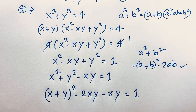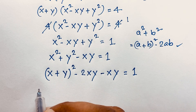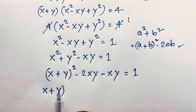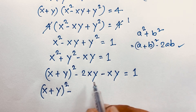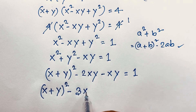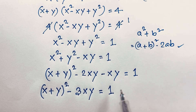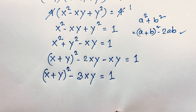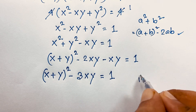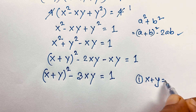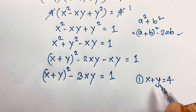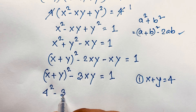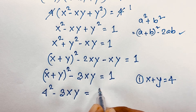Solving step by step: x plus y bracket squared minus 2xy minus xy equals x plus y squared minus 3xy is equal to 1. Remember that our first equation x plus y is equal to 4. So I substitute this value here, giving 4 squared minus 3xy is equal to 1.